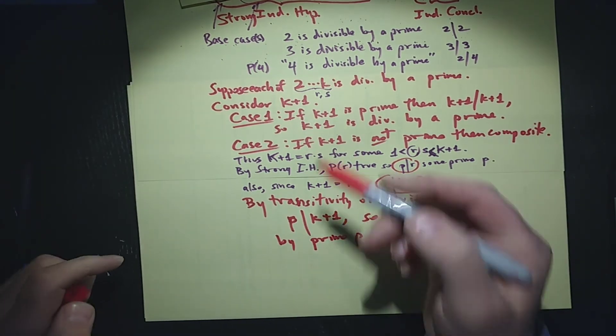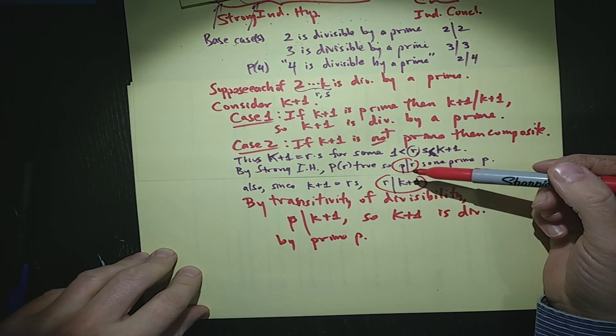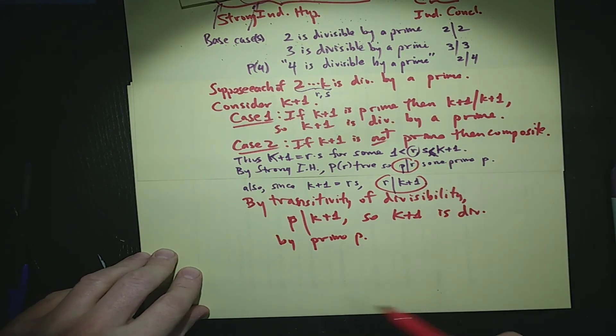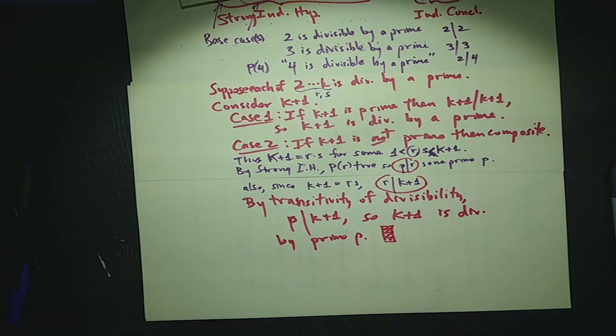And that finishes the induction step. We had to use the transitivity of divisibility and the definition of prime and composite. And we put our homos there. Our conclusion is that every integer n greater than 1 is divisible by a prime. And let's stop there.